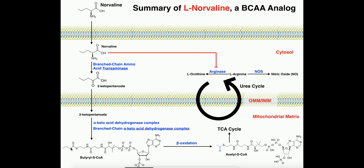Butyryl S-CoA looks just like a very small fatty acyl CoA, so it can undergo simple beta oxidation. After one round of beta oxidation we would actually produce two molecules of acetyl CoA, because this is a 4-carbon acyl group. So 4 carbons, one round of beta oxidation, gives us 2 acetyl CoAs. Those can directly enter the TCA cycle, which is still confined to the mitochondrial matrix.